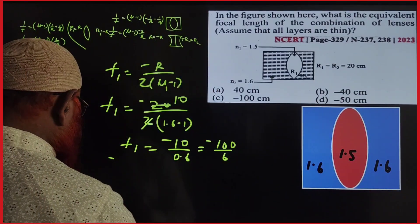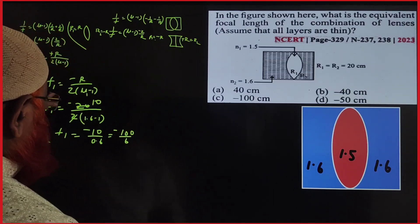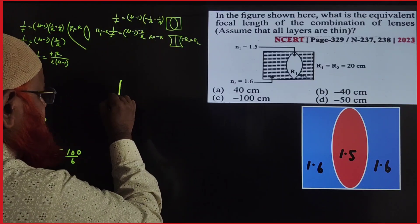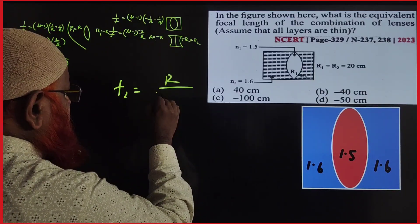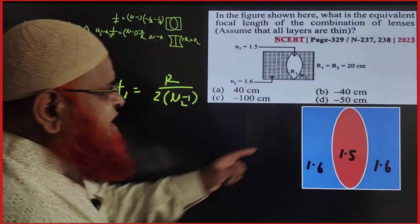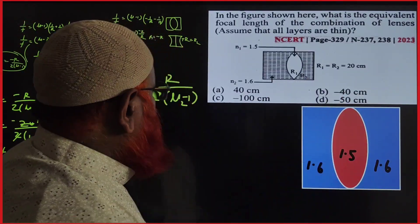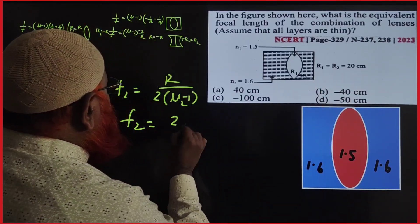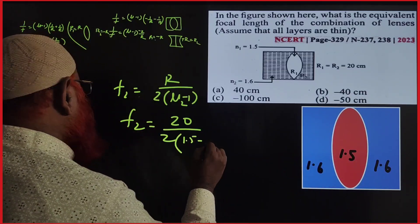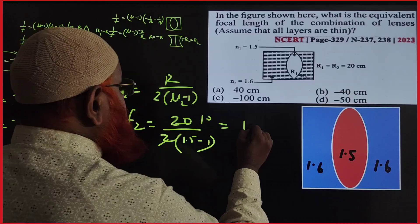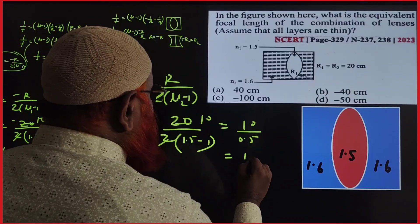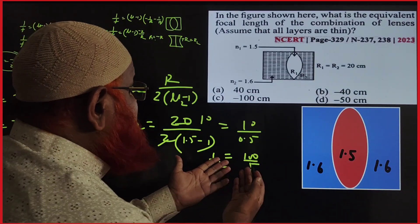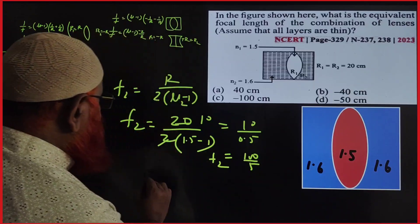For the convex lens in the middle: f2 = r / (2(μ − 1)). The radius is the same, r = 20, and μ = 1.5, so f2 = 20 / (2 × 0.5) = 10 / 0.5 = 100/5. So f1 = −100/6 and f2 = +100/5.